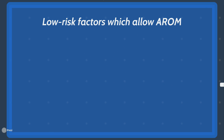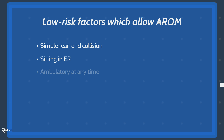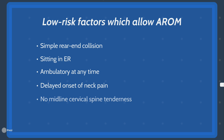If these high-risk factors are not present, check if the following low-risk factors apply, allowing safe assessment of range of motion. These are: 1) the accident was a simple rear-end collision — excluding being pushed into oncoming traffic, being hit by a truck or bus, high-speed impacts, or rollover accidents; 2) the patient is able to sit in the emergency department; 3) the patient is ambulatory at any time; 4) there was a delayed onset of neck pain, meaning no immediate neck pain after the trauma; 5) there is no tenderness over the midline at the cervical spine.